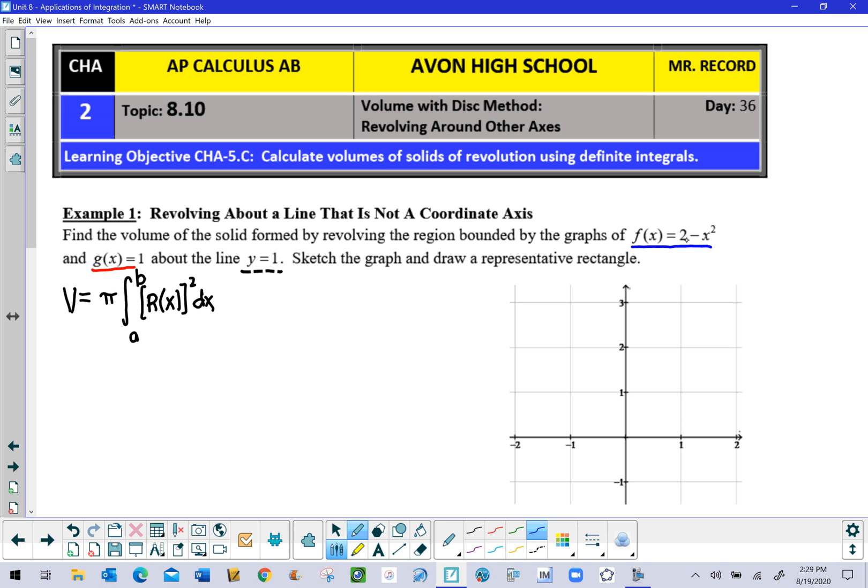For 2 minus x squared, we know that it has a y value of 2 when x is 0, and it's got y values of 1 when x is 1 and negative 1. It probably doesn't have a pretty x-intercept, somewhere between negative 1 and 2, probably the square root of 2, about 1.4-ish. But that doesn't matter, because the only part we're going to sketch is this part. Looking ahead to g of x equaling 1, which is the y equal 1 horizontal line, and boom, without much work, we have our shaded region.